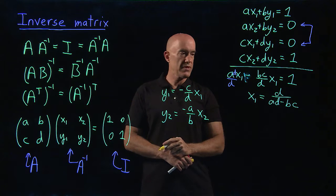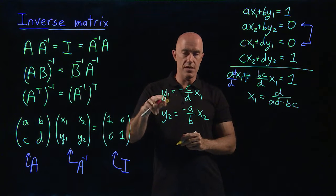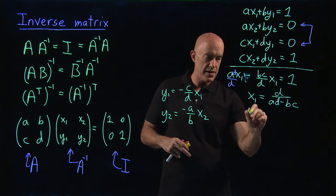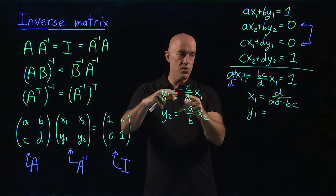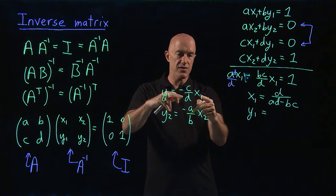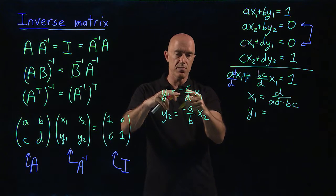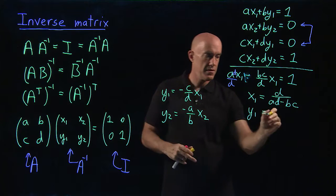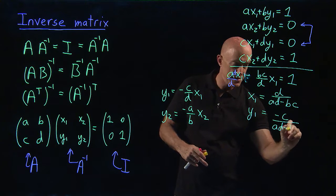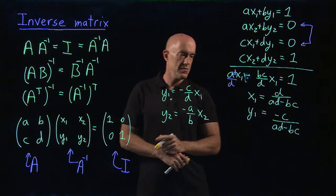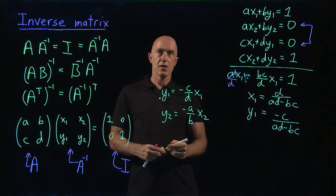So we've got x1. If we've got x1, then we also have y1. So y1 is in terms of x1. So it's minus c over d x1. The d cancels. So it becomes minus c over ad minus bc. We're good.